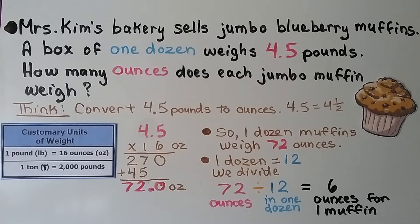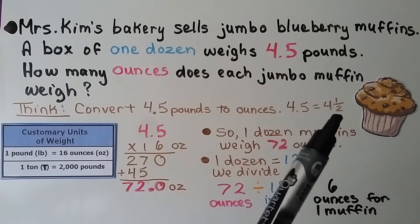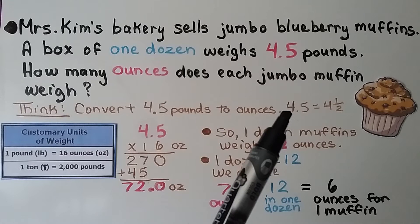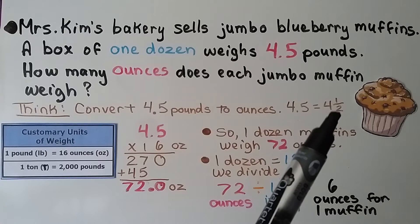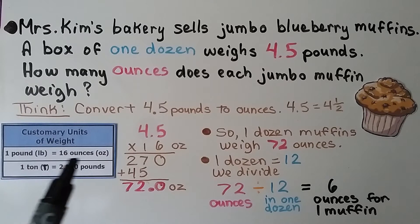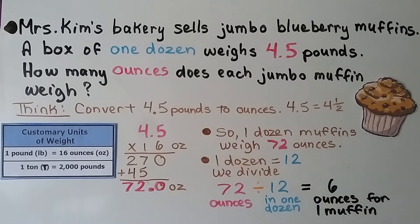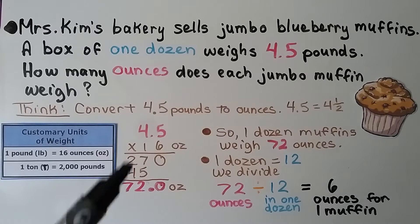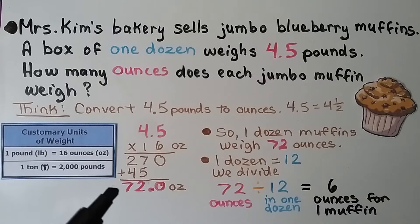we need to convert four and five tenths pounds to ounces. And be careful, four and five tenths pounds means four and a half pounds. It does not mean four pounds five ounces. A half of a pound would be eight ounces because one pound is 16 ounces. We multiply four and five tenths times 16 ounces in each pound. And we find that it's 72 ounces.